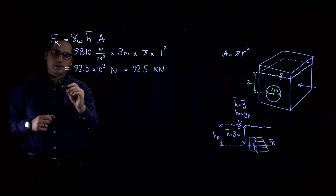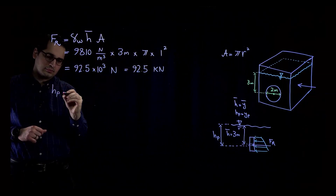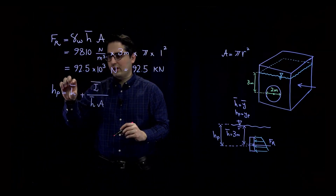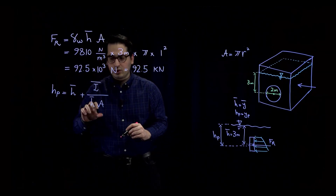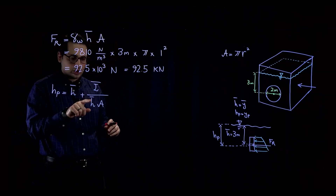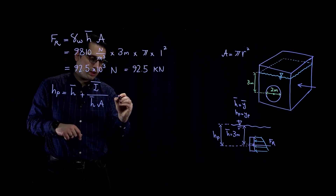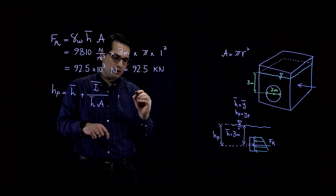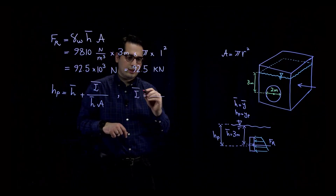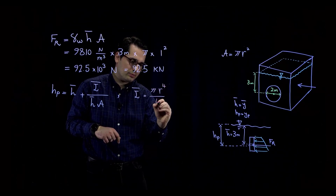The next thing I want to find is the location, which is H-sub-P. If you don't know why I wrote H-bar instead of Y-bar, you should watch the previous video on the theory. We have the value of H-bar and the cross-sectional area. The only thing we don't have is I-bar, the moment of inertia for a circular plate. From your textbook, that value is pi times R to the power 4 divided by 4.